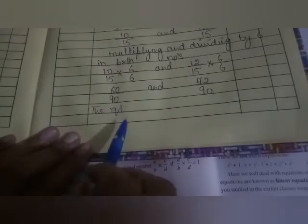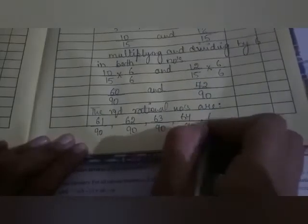We will write down here the required rational numbers are: 61 upon 90, 62 upon 90, 63 upon 90, 64 upon 90, and 65 upon 90. So here is our answer.